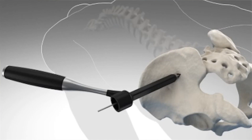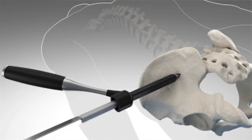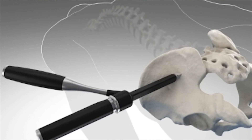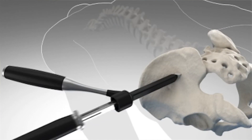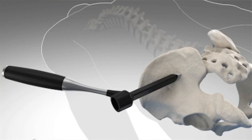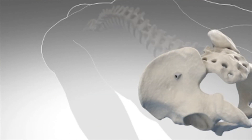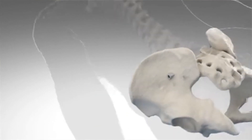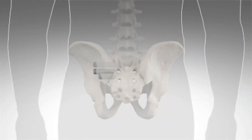The reason I like the iFuse system over just traditional screws is because when you have the triangular system that comes with the iFuse, it provides a little bit more rotation and will help prevent that rocking motion of the SI joint.